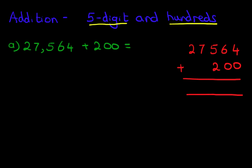Okay, we are ready to go ahead and do the addition. And as always, we start on the right-hand side. 4 plus 0, that's 4. 6 plus 0 is 6. Now we do the hundreds column. 5 plus 2. 5 plus 2 is 7. 7 plus 0, 7. 2 plus 0 is 2.